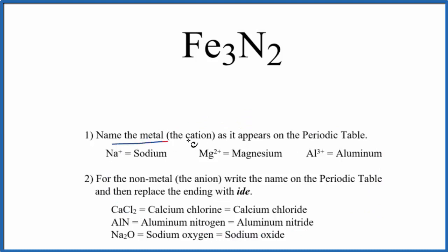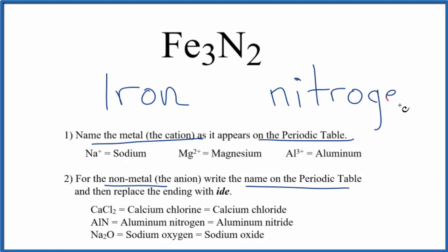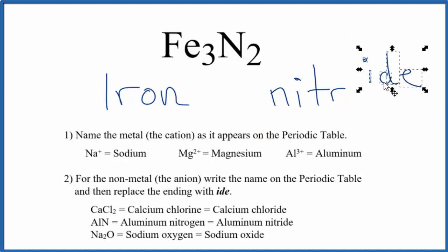First, we'll name the metal as it appears on the periodic table. Fe, that's iron. Next, we name the non-metal as it appears on the periodic table. N is nitrogen, and we replace the ending with ide. So at this point, we have iron nitride.